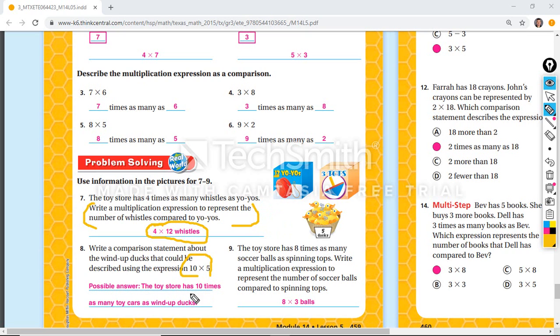So you could have used anything, any other. The store has ten times as many dolls as wind-up ducks. The toy store has ten times as many marbles or anything that has to do with you adding ten times as many as the wind-up ducks.